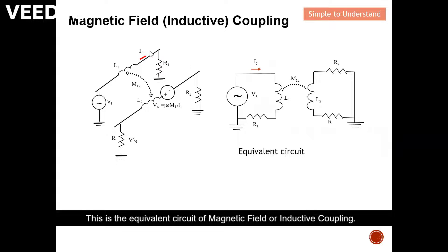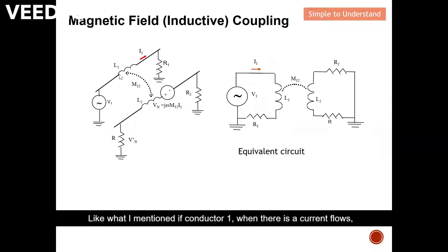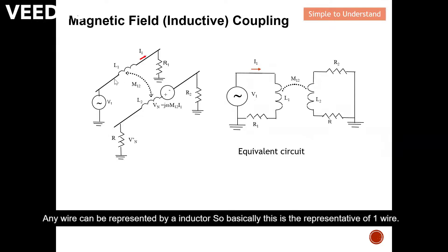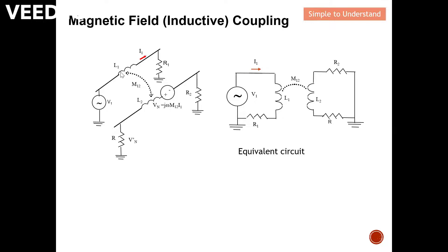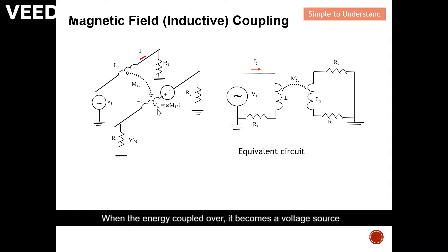This is the equivalent circuit of magnetic field or inductive coupling. We call this conductor one and conductor two. Like I mentioned, when there is current flow in conductor one, magnetic coupling will occur. Any wire can be represented by an inductor. So basically this is the representation of one wire, and when the energy couples over, it becomes a voltage source.